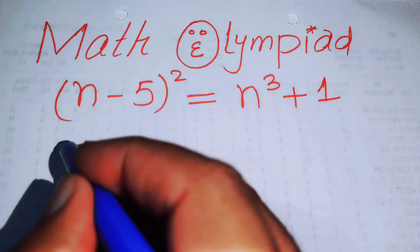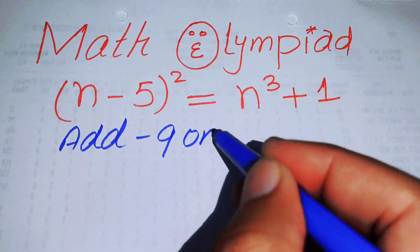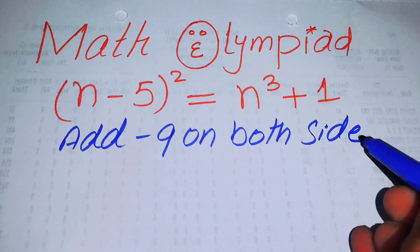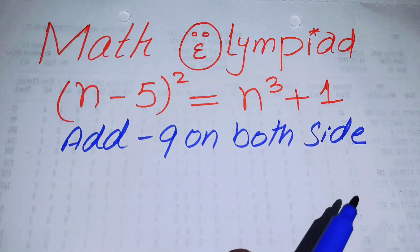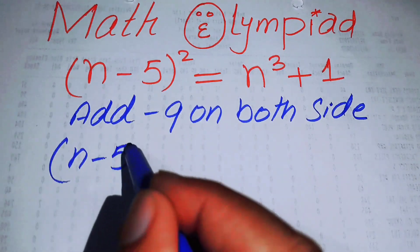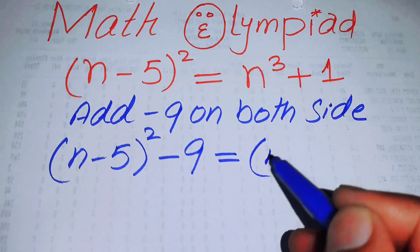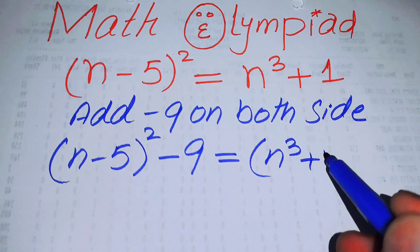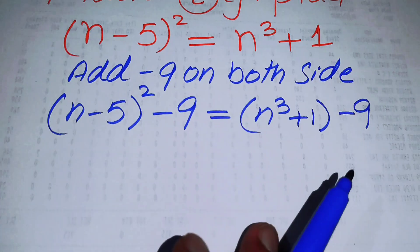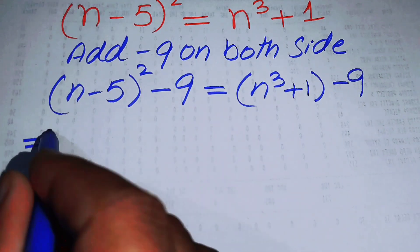The very first thing we are going to do is add -9 on both sides. When we add -9 on both sides, we get (n - 5)² - 9 = n³ + 1 - 9.